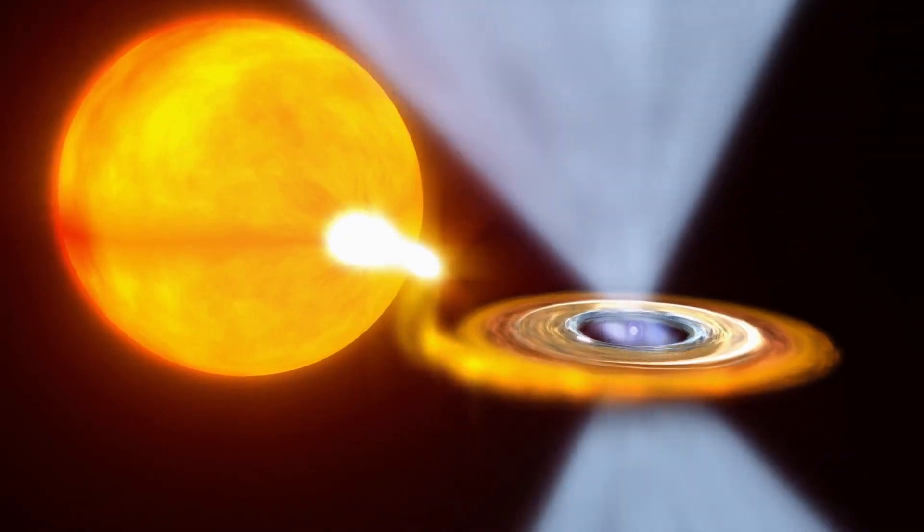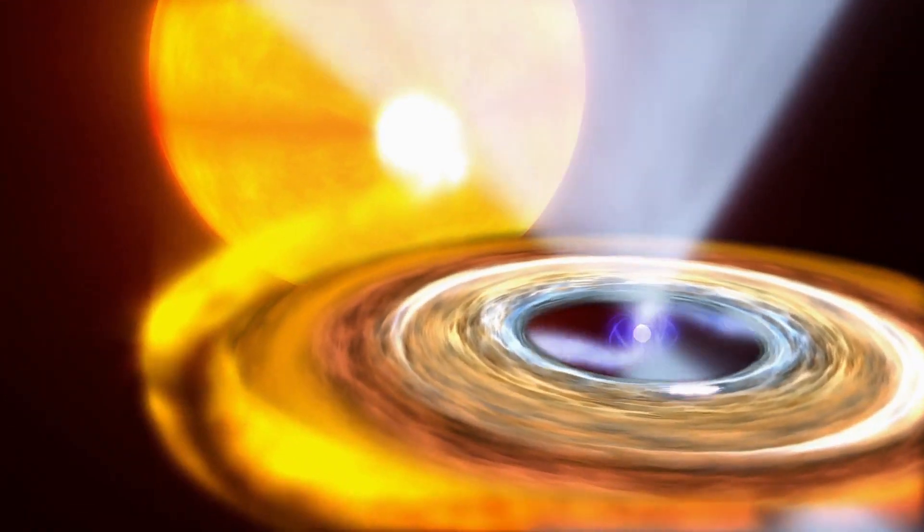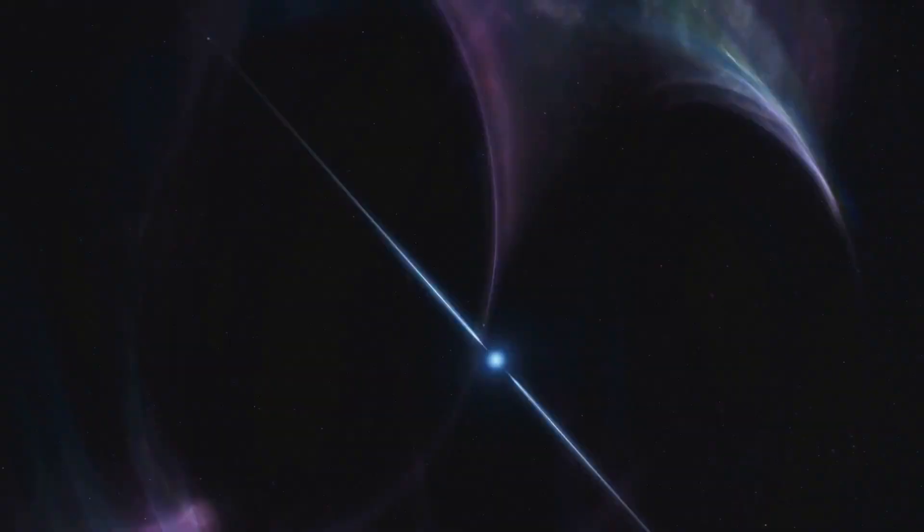A neutron star is the densest celestial body in the universe, with a density that can reach 100 million tons per cubic meter. Can material similar to neutron stars be created?